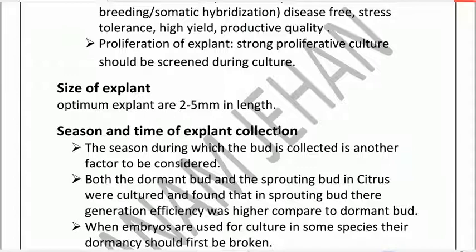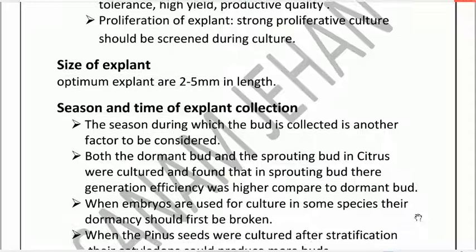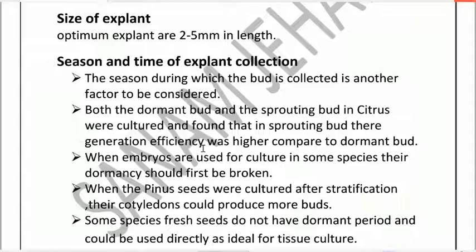Season and time of explant collection: the season during which the bud is collected is another factor to be considered. The best season is when more buds are formed. Between dormant buds and sprouting buds — for example in Citrus — sprouting buds give higher generation efficiency as compared to dormant buds. Dormancy is a term where the bird's growth is retarded, stopped, or reduced.